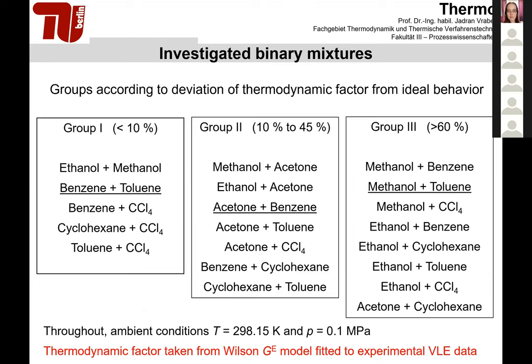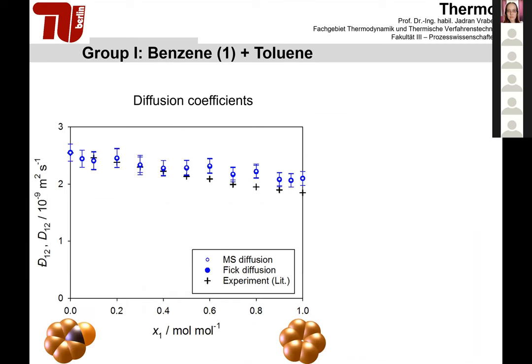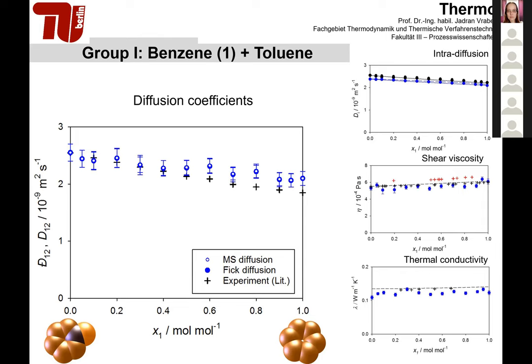The 20 mixtures are grouped according to their non-ideality: group one is weakly non-ideal or almost ideal, group two is moderately non-ideal, and group three is strongly non-ideal. All data are at ambient conditions where experimental data are available. For benzene plus toluene, the Fick and Maxwell-Stefan diffusion coefficients basically coincide, and the comparison with experiment is very good for this rather simple model. Since simulations allow access to all thermodynamic properties, we can also compute shear viscosity and thermal conductivity.